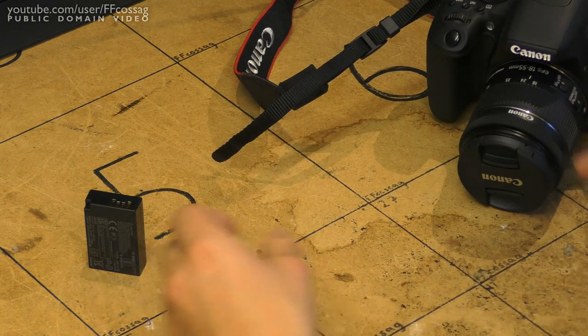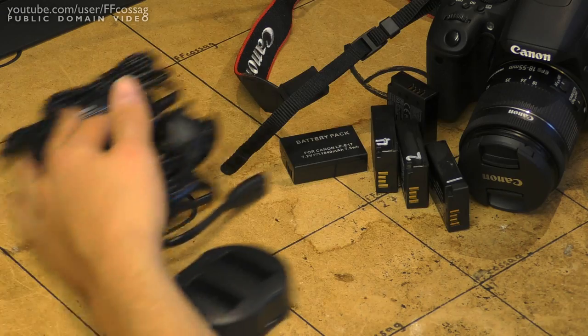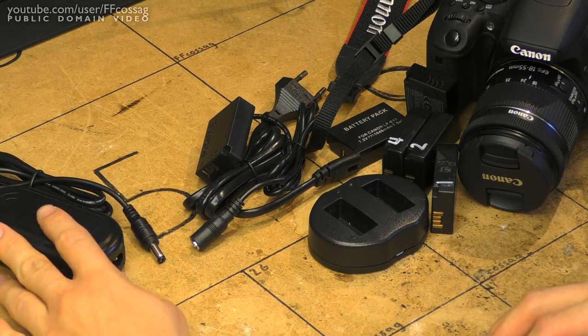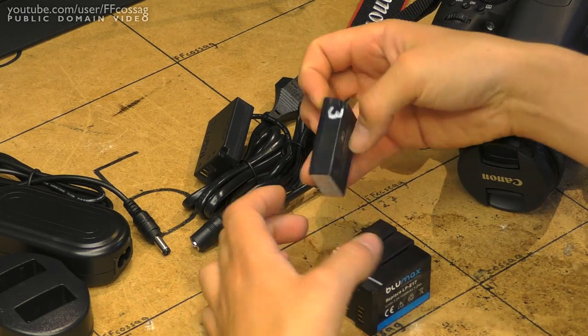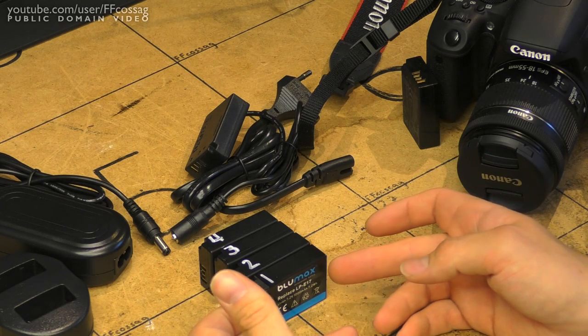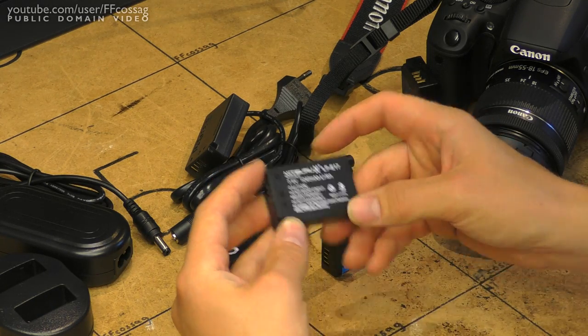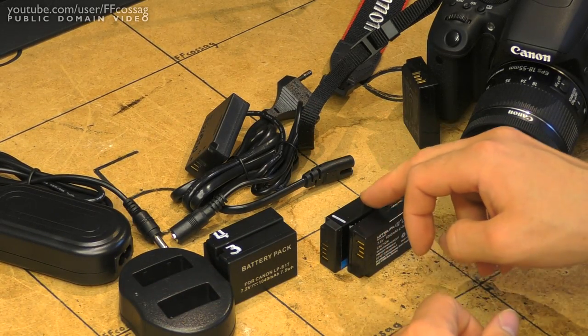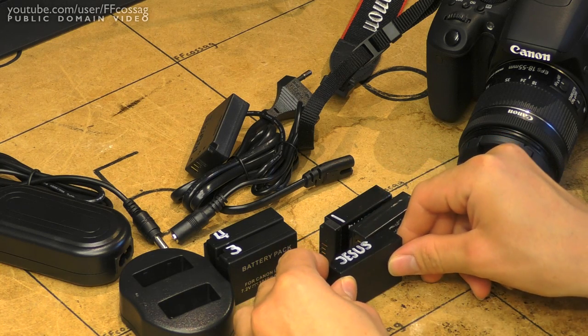So I have gone to eBay and purchased a whole bunch of cheap accessories for this thing. We've got four enumerated batteries of various price grades. The Bluemax costs about 20 euros as did this Mitsuru brand. And these two along with this charger cost about as much as one of these batteries. In total they cost about as much as this one original Canon battery.